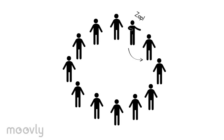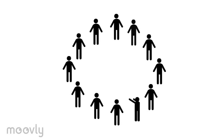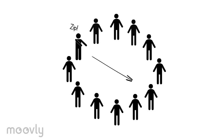Let the team practice with the new rule of zap. When everyone in the circle has passed on the zip and the zap a couple of minutes, you bring a new rule to the exercise. The new rule is boing.